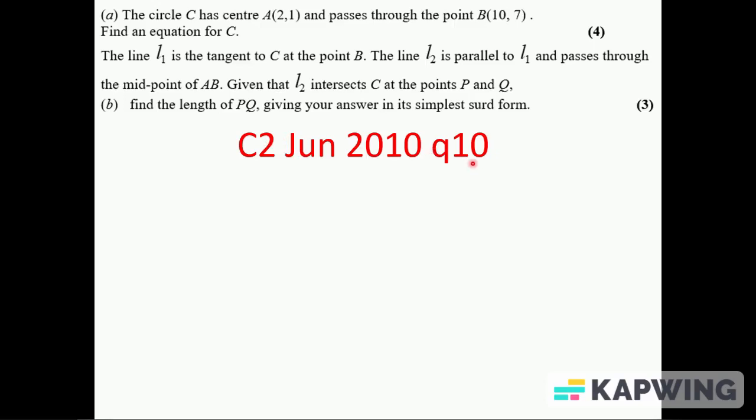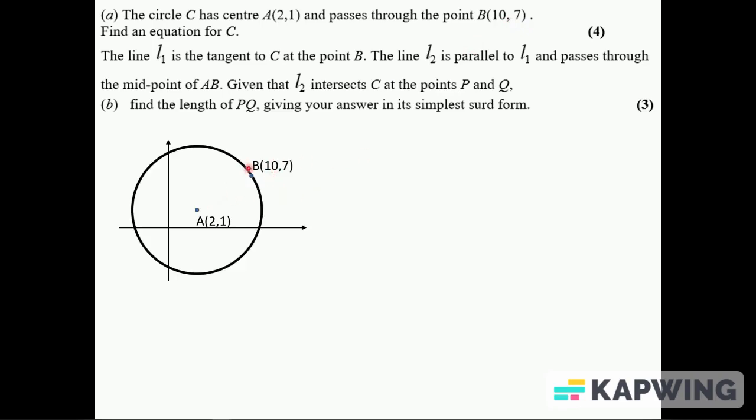C2 June 2010 Question 10, last question on the paper. One of my favorite circle questions. We've got circle center (2,1) passing through the point (10,7). So the circle looks like this.